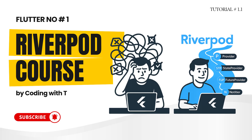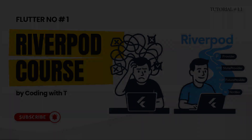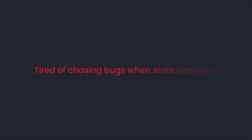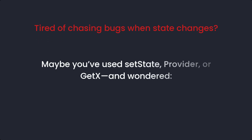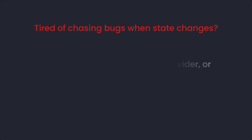First of all, let's see the problem without going into details of what Riverpod is. The problem is that you might have spent hours debugging your code — your UI is not updating when you want it to, or in other cases the UI is updating repeatedly when you don't want it to. Maybe you have used setState, Provider, or GetX and wondered why the widget rebuilds when you don't want it to.